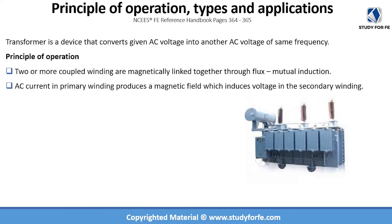Principle of operation, types, and applications of transformers. A transformer is a device which is central to power systems engineering. It converts a given AC voltage into another AC voltage of the same frequency, and the principle of operation is based on two or more coupled windings which are magnetically linked. They are electrically isolated but they have magnetic coupling.